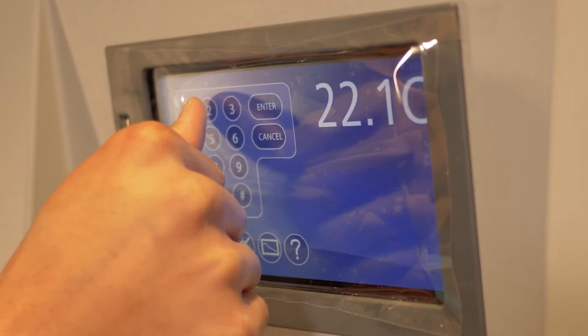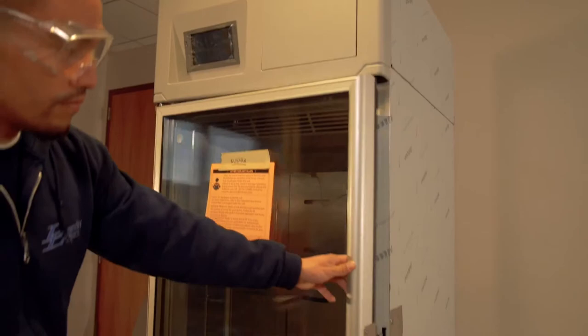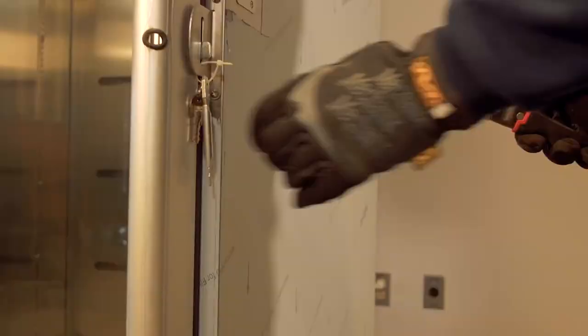For keypad units, the access code for the controller will be 123456 ENTER. This will allow access to open the refrigerator door.